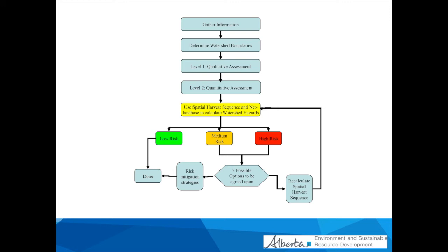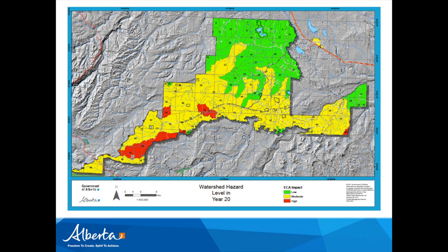Once we have our ECA values calculated, we identify the risk for each watershed: if ECA is less than 30%, it's low risk; between 30% and 50%, it's medium; greater than 50%, it's high. We present all that information on a map showing delineations of all the watersheds in the case study. For each watershed, we calculated that metric and display our results on the map, along with recommendations to our planners, managers, and the company involved.